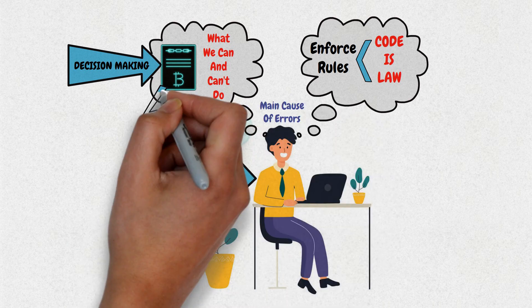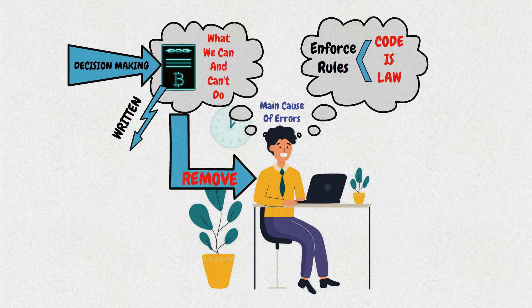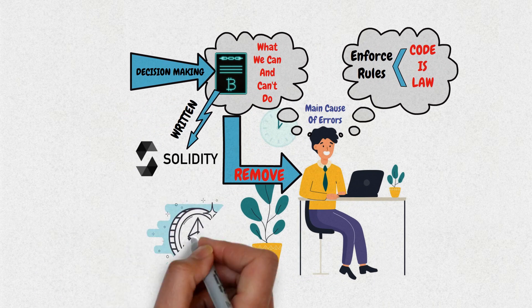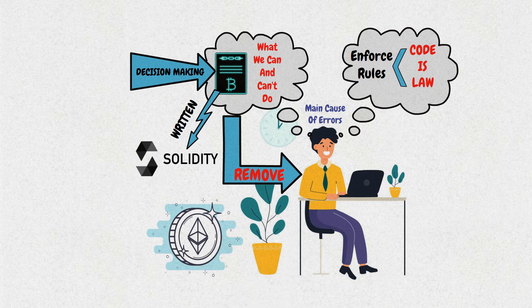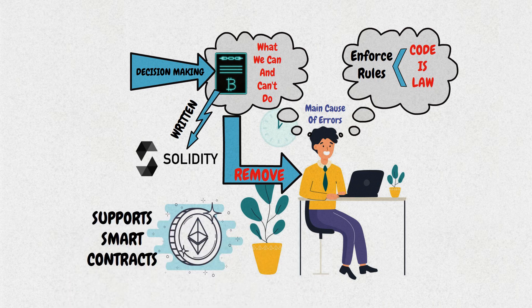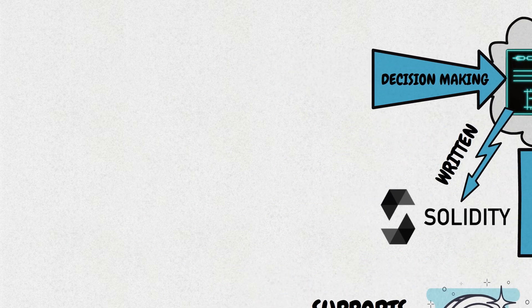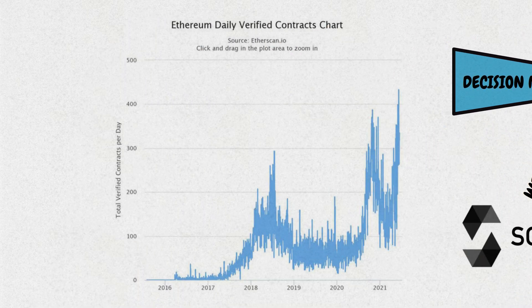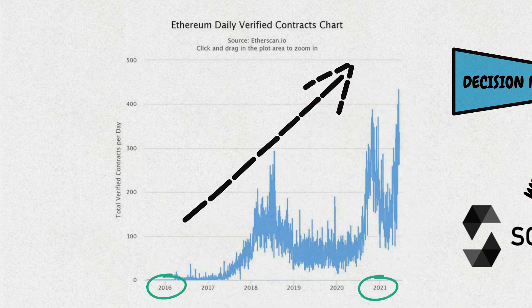A smart contract is usually written in the programming language called Solidity, which was created specifically for that purpose. Ethereum is a good example of a blockchain that supports smart contracts. On the chart below, we see the daily verification of contracts on Ethereum from 2016 to 2021, which shows a growing interest and usage of smart contracts.